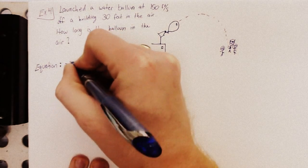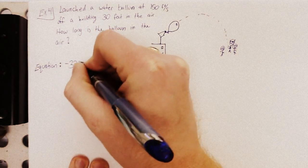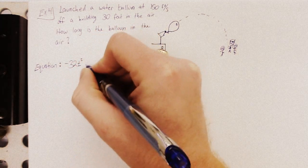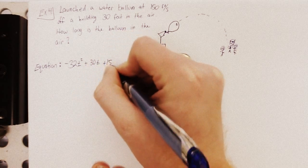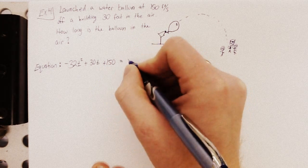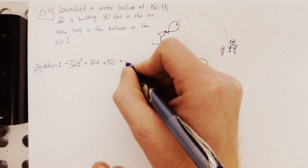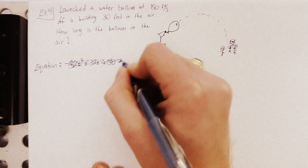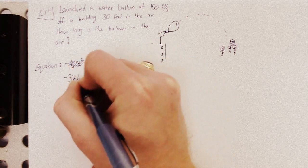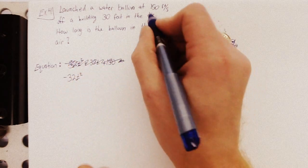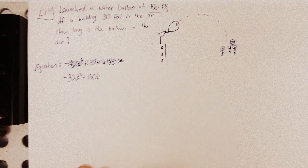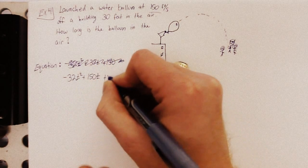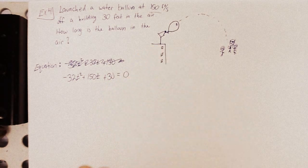But, it's negative 32t squared. It's going to be plus 30t, plus 150. And it's going to equal, oh, I did it backwards. Let's cross that out and start over. 32, that's actually gravity. 150 feet per second is the speed it's launched at, and 30 is the height. I actually had that backwards.